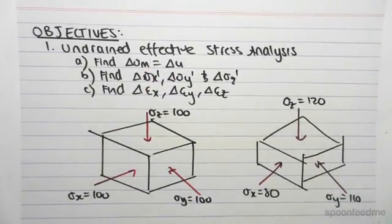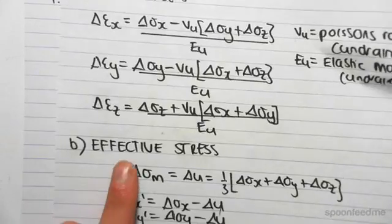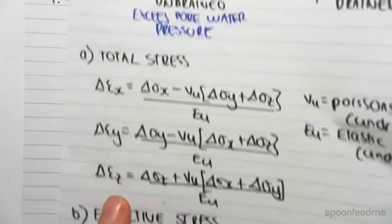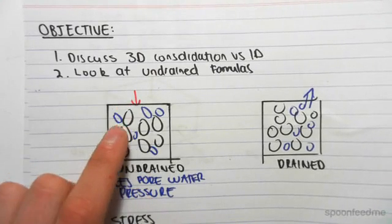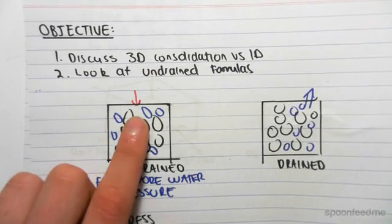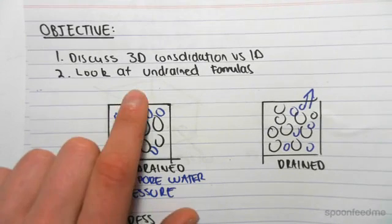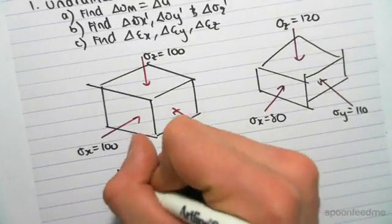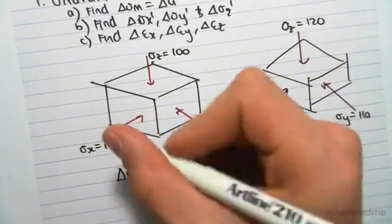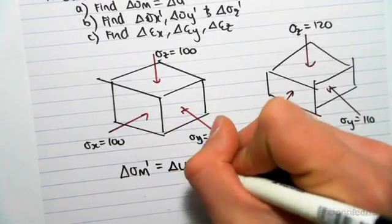Now because when we have an undrained case, once again, we've done total stress, we're doing effective stress now, and we're going to get the same answer. When we're doing an undrained case, we mention that all the stress is felt by the pore water pressure. We get excess pore water pressure because all the applied stress is felt by the water. So we can say that the mean stress, the mean volume stress is equal to the change in the pore water pressure.